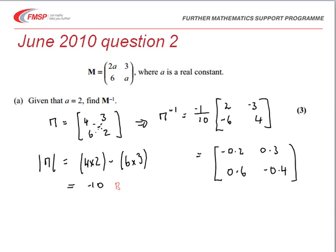The marking came from a B1 mark for calculating the determinant, so no method needed, you simply needed to know that the determinant was negative 10, and that could be implied by what you'd written here, or even the answer at the end.